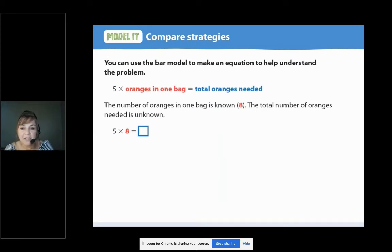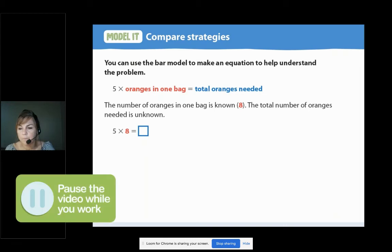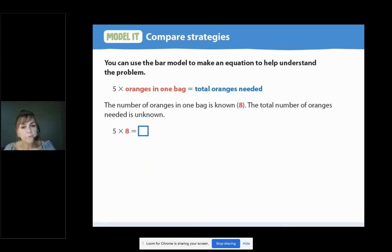Here, let's take a look at another strategy and compare. You can use the bar model to make an equation to help understand the problem. Five times oranges in one bag equals total oranges needed. How is it helpful that an equation is first written with words? I want you to pause and talk out loud about how the words are helpful. Well, I know for me, it helps me to turn the proper mathematical language, I call it MathGlish, into English. And then I can model it better in my head.